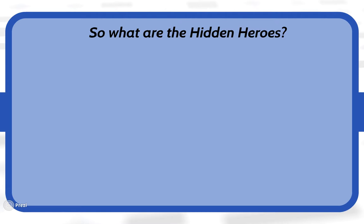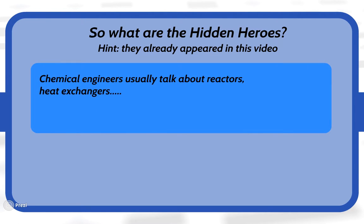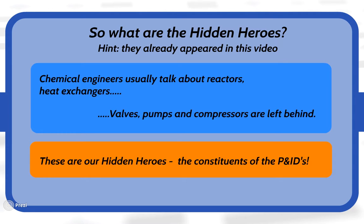Earlier we mentioned hidden heroes, but what exactly are they? Here is a hint — they have already appeared in the video. Chemical engineers usually talk about reactors and heat exchangers. However, valves, pumps and compressors are left behind. These are our hidden heroes, the constituents of the P&IDs.